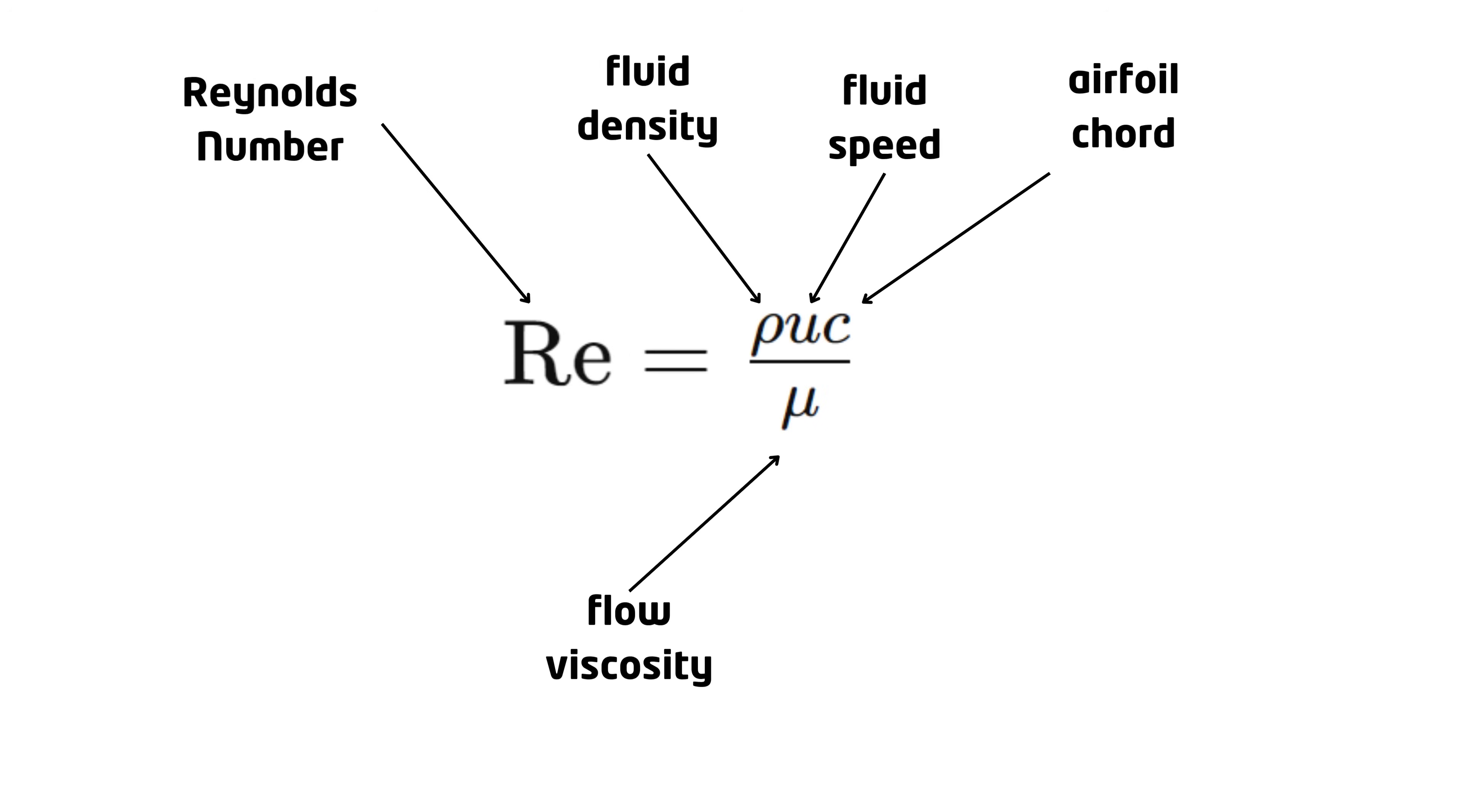The Reynolds number is a dimensionless value that tells us how likely the flow is to turn turbulent. It relates the speed of the flow to the scale of the object and the viscosity of the fluid, which are the main factors affecting the onset of turbulence. Higher Reynolds numbers means turbulence is more predominant, because the flow speed or object scale is large relative to the flow viscosity.